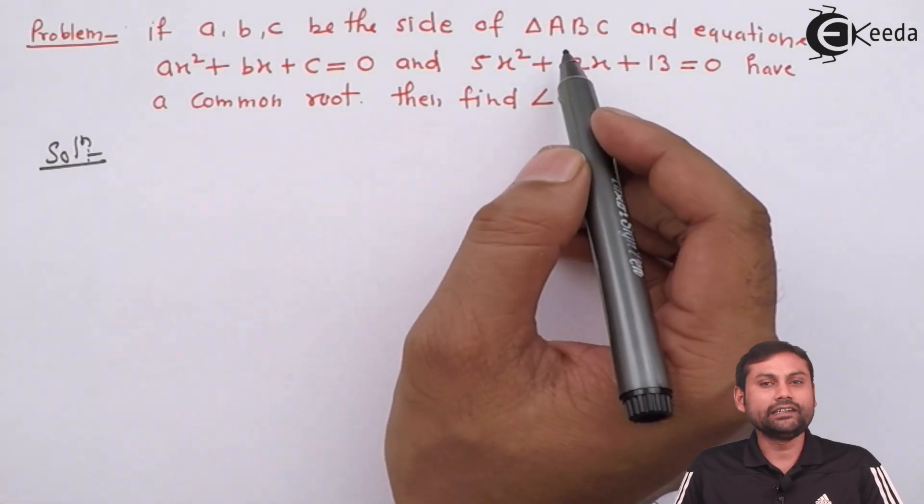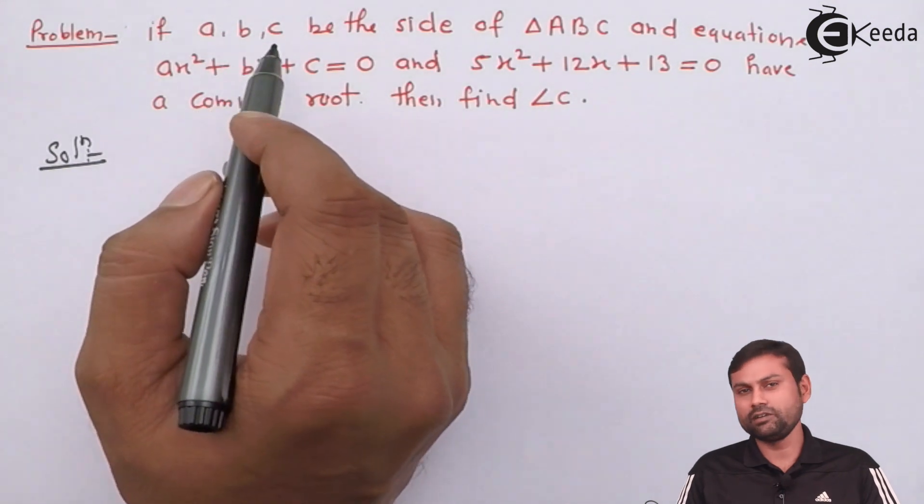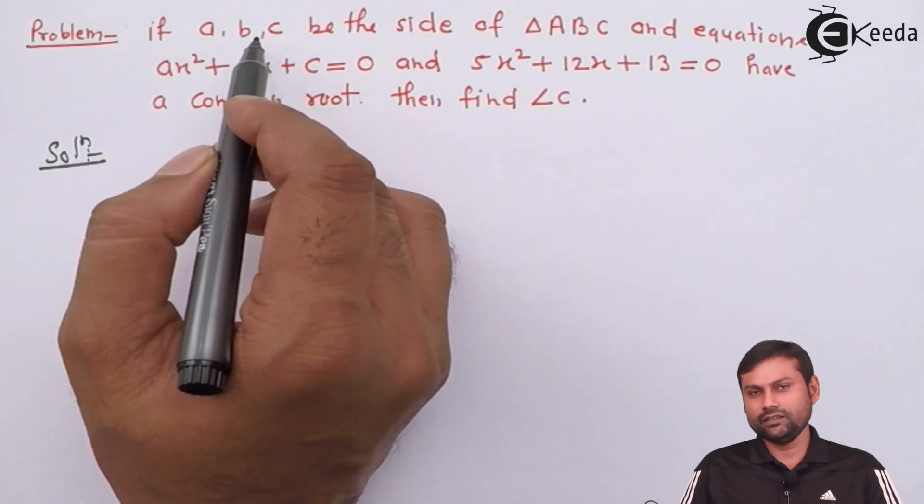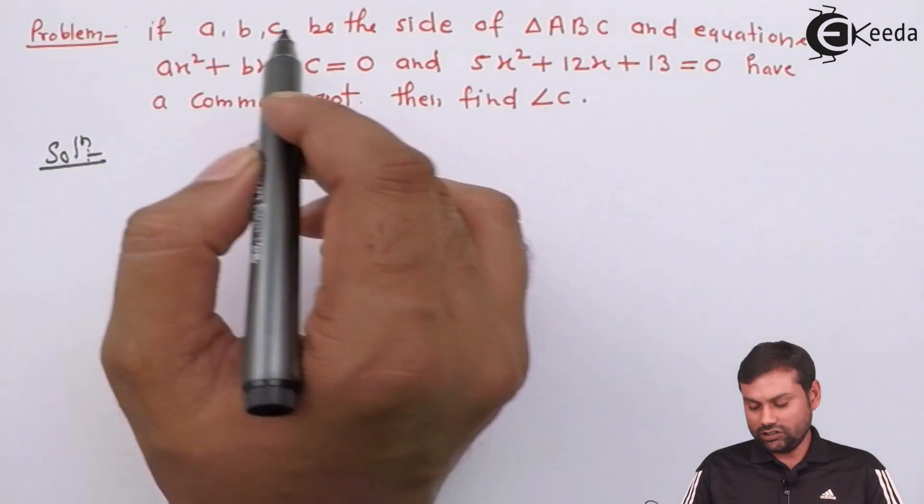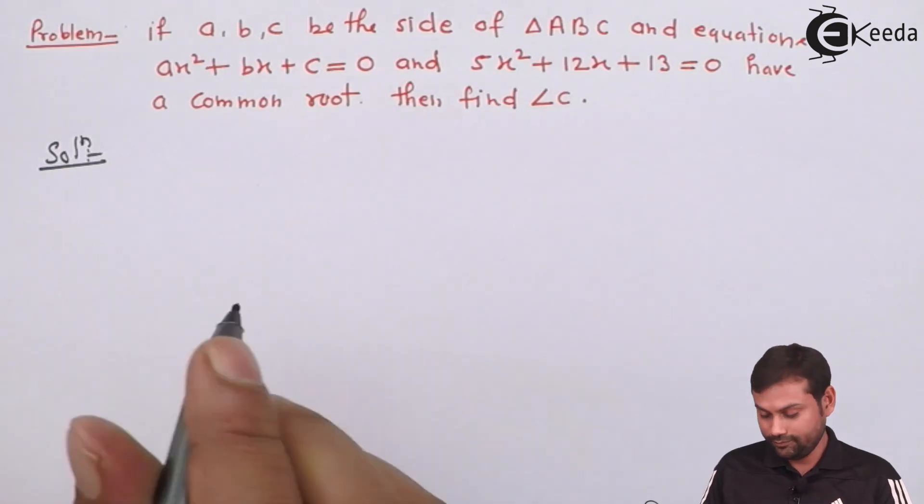ABC or side of any triangle ABC. Okay? So, first we stabilize the relation between the coefficient of a quadratic equation and this ABC. Okay? Let's see. How do we solve?